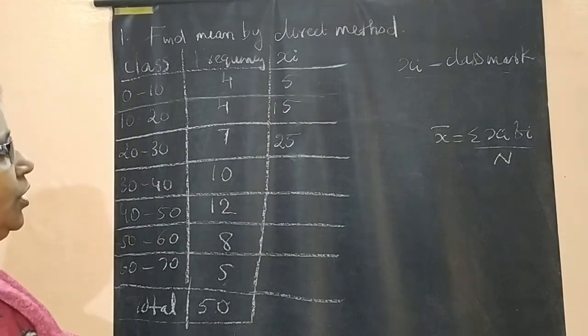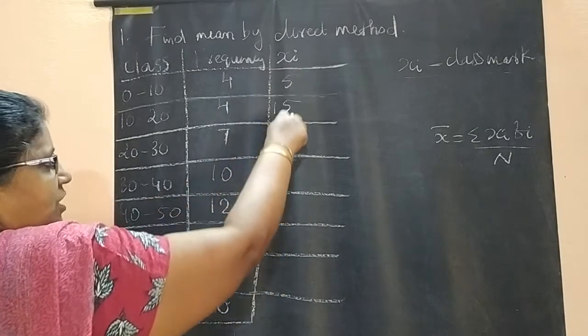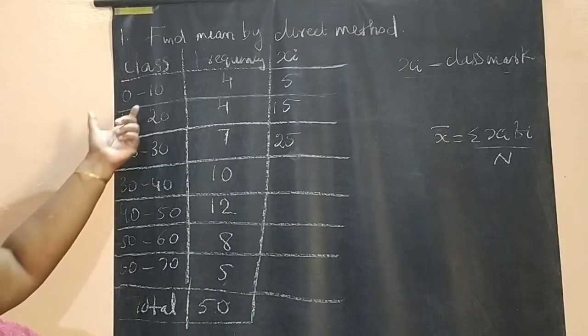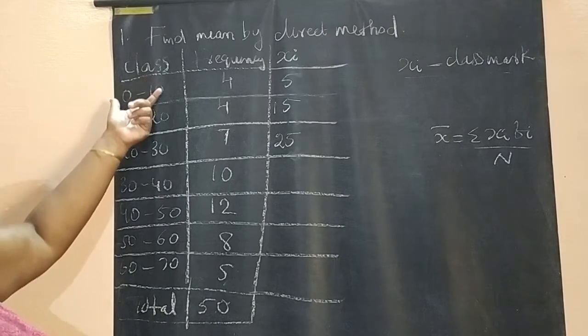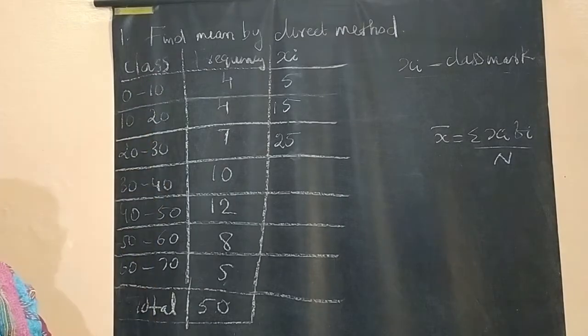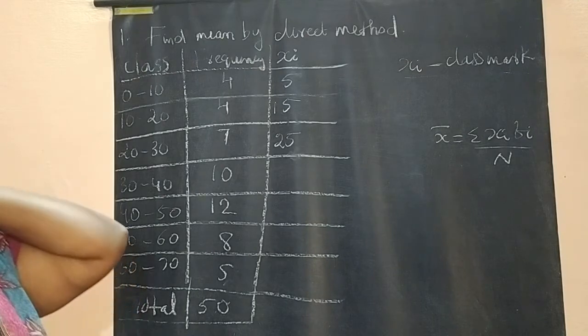Now you see, no need of calculating every time plus and by 2. First itself you have to see whether the given class has equal class size or class width.